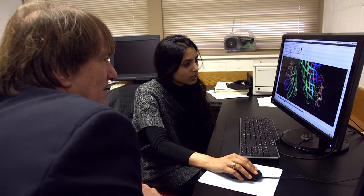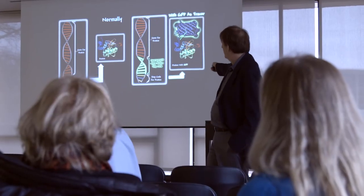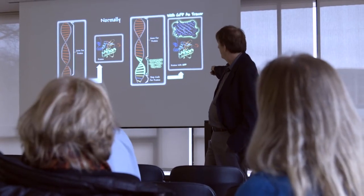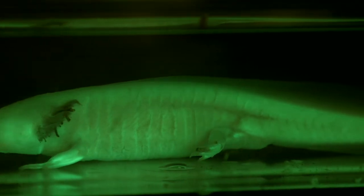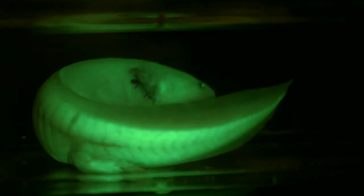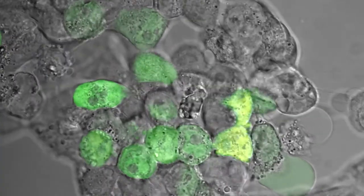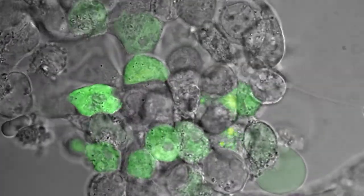I'm a computational chemist. I use computers to try and calculate why these proteins give off light, why they give off a certain color, and what we can change to make them brighter. Imagine if you wanted to see what's happening inside an organism — you want it to be really, really bright. Then we can see where things move in a cell, when they're made, when they're destroyed. Now we can see things we could never see before.